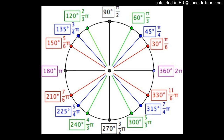Now, different types of angles. First is the zero angle: if in directed angle AOB the rays OA and OB are the same — that is, the amount of rotation is zero — then we call that a zero angle. What is a straight angle? If in directed angle AOB the initial arm (ray OA) and the terminal arm (ray OB) are opposite rays, then it is a straight angle.